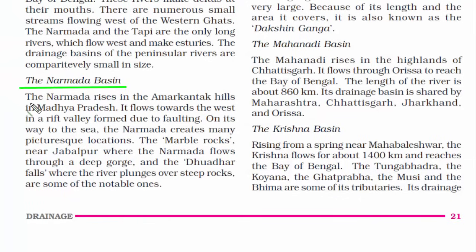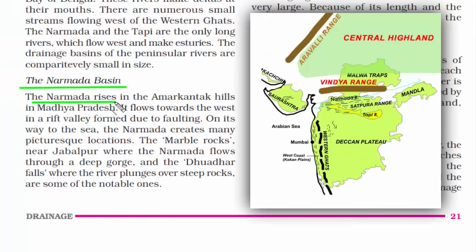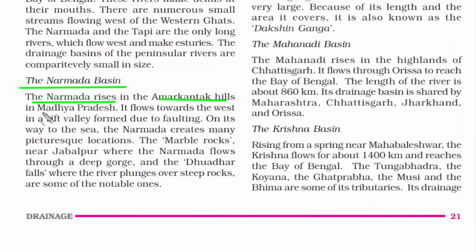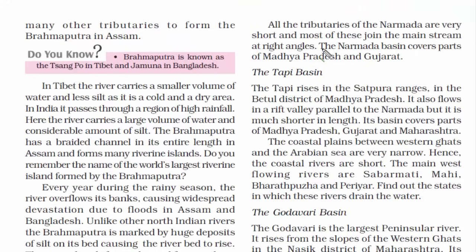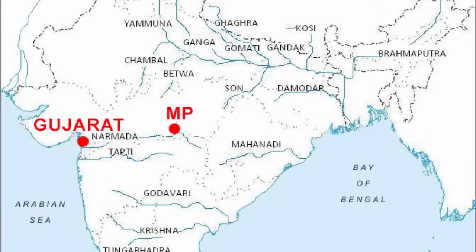Let's talk about the Narmada Basin. It rises in the Amarkantak Hills in Madhya Pradesh and moves towards the western side. You will get to see picturesque locations like the Marble Rocks near Jabalpur and the Dhuandhar Falls, where the river plunges over steep rocks creating a beautiful waterfall. The tributaries of Narmada are very short. The Narmada Basin covers parts of Madhya Pradesh and Gujarat.